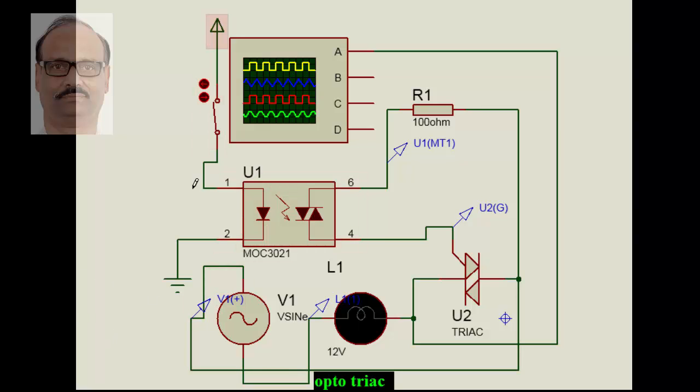For example, here what he has done: he has taken a switch with supply and directly connected to the LED of the opto-isolator. In this case, the opto-isolator LED will fail because there is no protective resistance, series resistance, put to the opto-isolator LED.